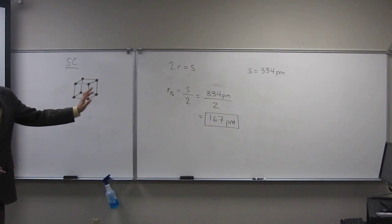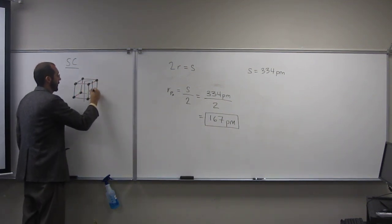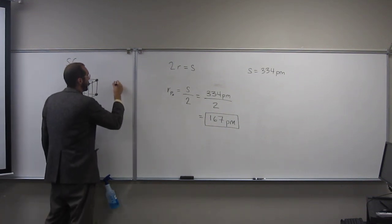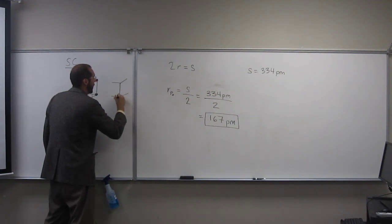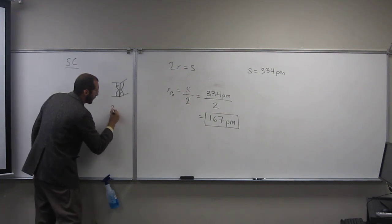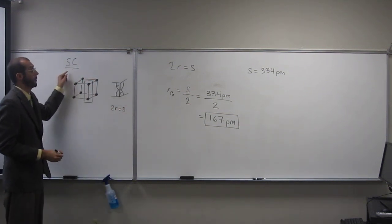So is everybody okay with that? Remember what we did when we blew this part up here. If we kind of think of that as being r and r, this is the whole side there. So 2r equals the side. That's how you do it for the simple cubic.